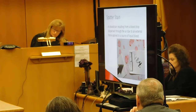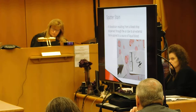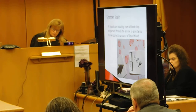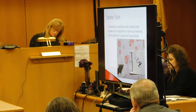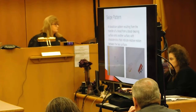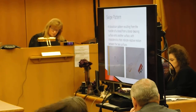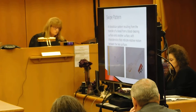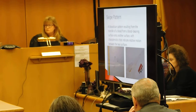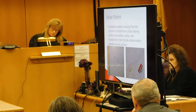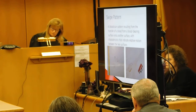Slide fifteen: a spatter stain is simply a blood stain resulting from a blood drop dispersed through air from the external force applied to liquid blood, and it creates a spatter pattern. Slide sixteen: a swipe. A swipe is a blood stain — if I have blood on my hand and I come in contact with this podium and I move, that is considered a swipe. If I come in contact with the podium and I don't move my hand, that's considered a transfer. So a swipe implies movement within the contact.